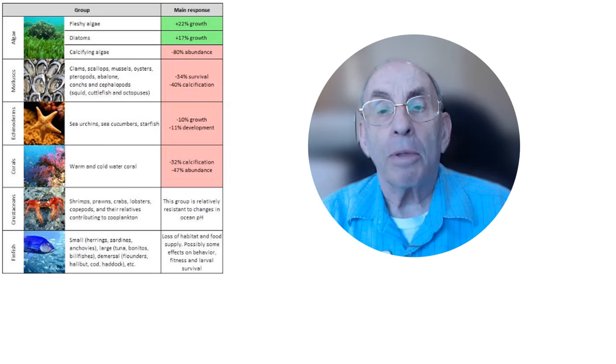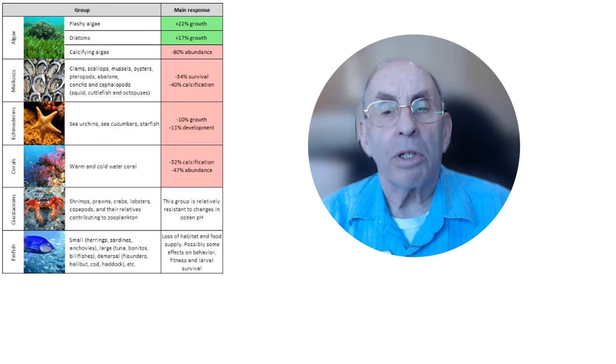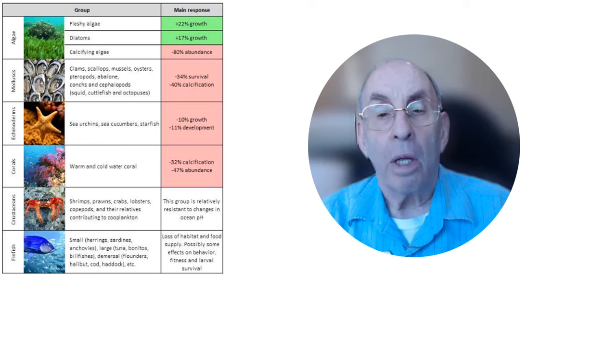The impact of the current episode of ocean acidification on marine life is an area of active research, and there's still much that is unknown. It may well be the case that many species of marine life will be able to adapt to the increasing acidity of the oceans, while others will be much more severely affected. This table provides some estimates of the major responses of different types of marine life to ocean acidification, based on the current state of scientific knowledge. The table may be a bit difficult to read, so I'll go through it with you.